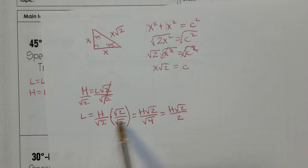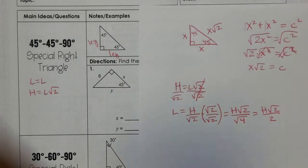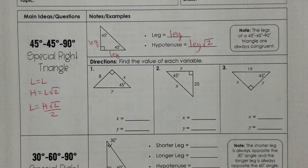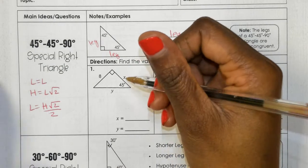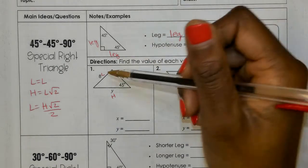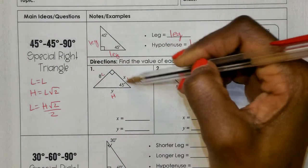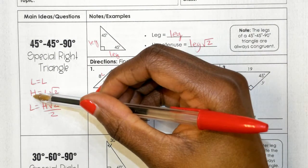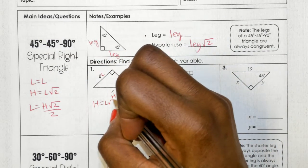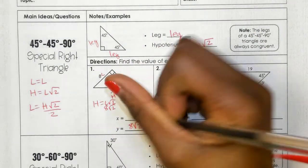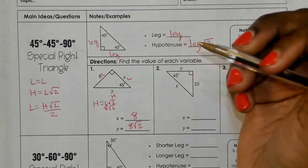So this is the shortcut: the leg equals the hypotenuse times radical 2 divided by 2. On number 1, we have a leg given — identify whether it's a leg or hypotenuse. We have a leg of 8, so the other leg x equals 8. For the hypotenuse, we plug 8 in for L, giving us 8 radical 2. So the two legs are both 8 and the hypotenuse is 8 radical 2.